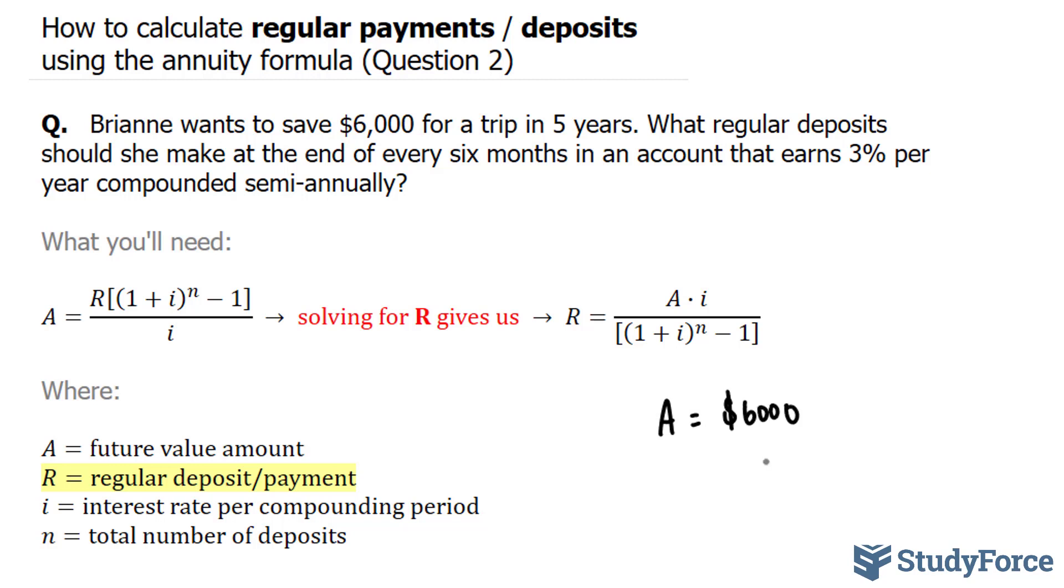We're also told that she will earn 3% per year interest. So i is equal to 3% per year. And of course, the interest is compounded semi-annually, which means it will be compounded every 6 months. So what we have to do with this 3% is divide it by 2. And the reason why we are dividing it by 2 is because 6 months occurs twice in a year. Dividing these two numbers gives us 1.5%.